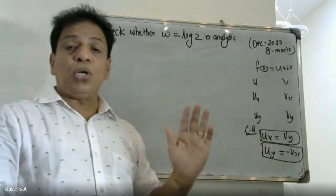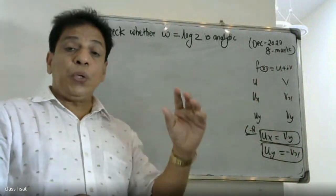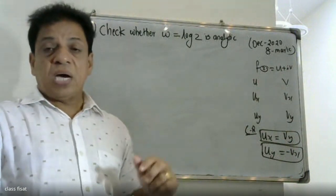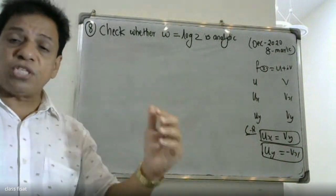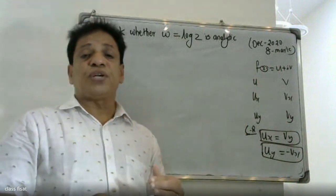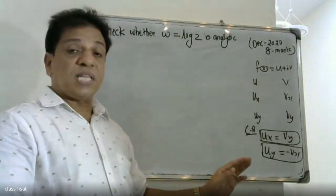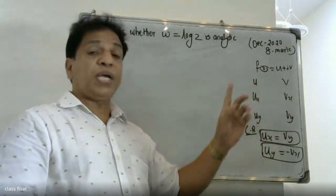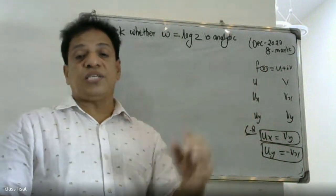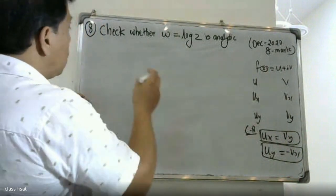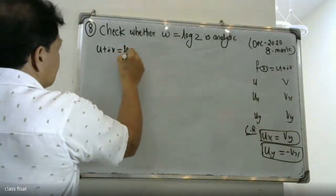We have to say w is equal to log z. If we take log z, we need to find U and V. W is equal to log z, so u plus iv is equal to log z.